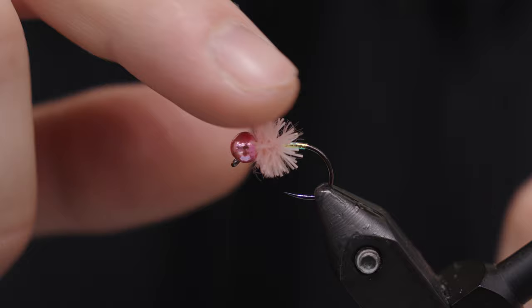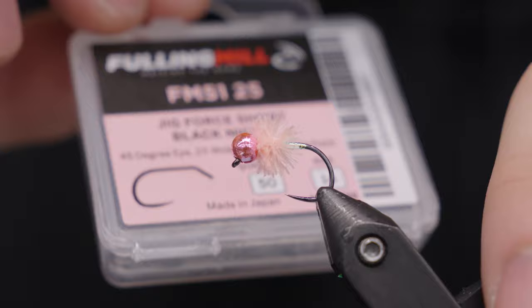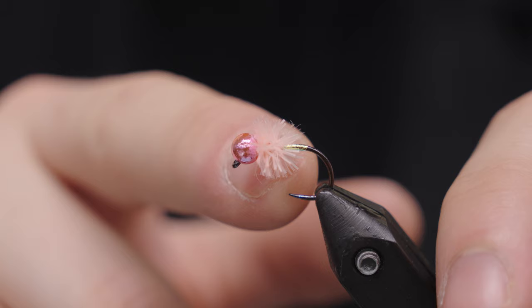Looking at this hook here, this is the Jig for Short 51-25. It is a 45 degree bend, 2X wide, 2X short with a very wide gap and this upturn point. They call it the claw point. That's the hook. It's a size 14 from Fulling Mill, 51-25.